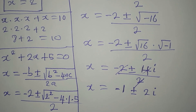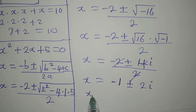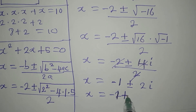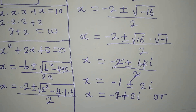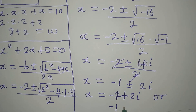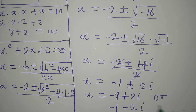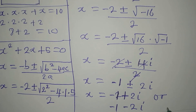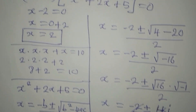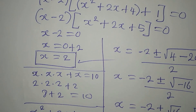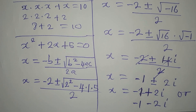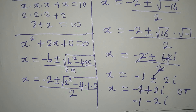This is a two-in-one solution: X equals minus 1 plus 2i, or X equals minus 1 minus 2i. These two are not real solutions. The only real solution is X equals 2. Thank you for watching to the end — please subscribe if you haven't already.